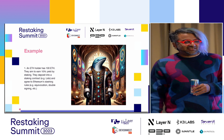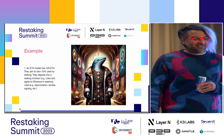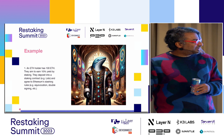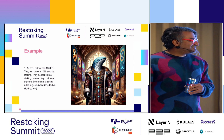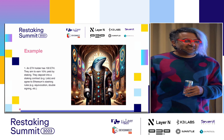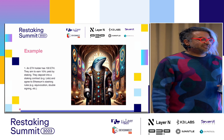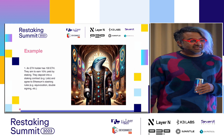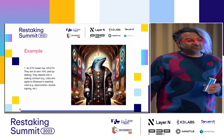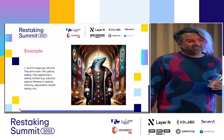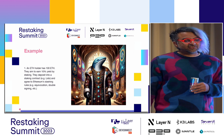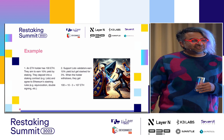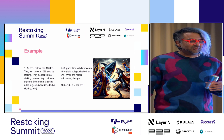Imagine you have an ETH holder — they have 100 ETH and they want to earn 10% yield by staking. They deposit into a staking contract like Lido and effectively agree to Ethereum slashing rules for things like equivocation, double signing, et cetera. The supporting Lido validators earn the 10% yield but also get slashed, and when the holder withdraws, they get 107 ETH.